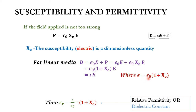The permittivity ε can be written as ε₀ times (1 + χₑ), so ε = ε₀(1 + χₑ). Here ε₀ is the permittivity of vacuum. We also define the relative permittivity: εᵣ = ε divided by ε₀.